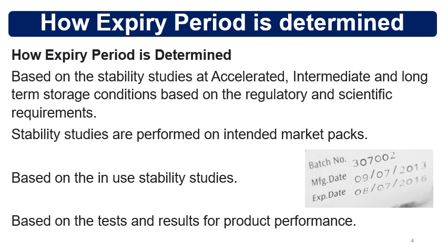The stability studies involve storing the medicines or drug products at various storage conditions: accelerated conditions at 40°C and 75% RH; intermediate conditions at 30°C and 65% RH; and long-term storage conditions based on climatic zones, generally 25°C and 60% RH. For zone 4B countries or regions, 30°C and 75% RH. Based on stability studies performed on the intended final market packs, the data is evaluated and the expiry period is determined. Manufacturers also perform in-use stability studies based on the label, product container, and intended use, and based on that, the in-use stability period is given.